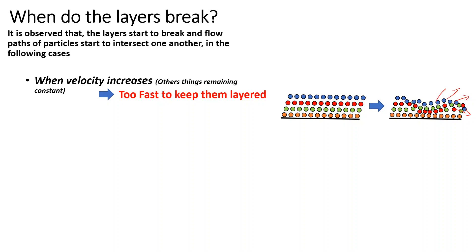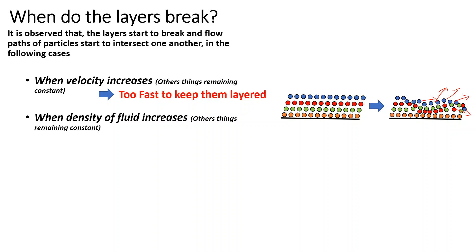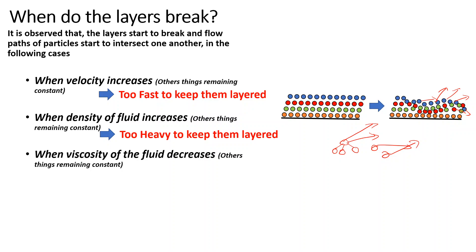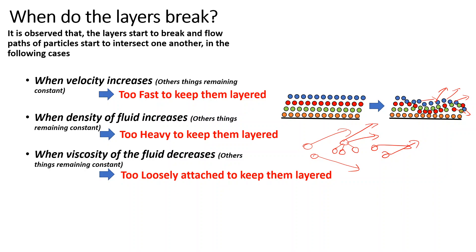Another case is when the density of fluid increases. If the particles become heavier, it is very difficult to keep a heavy particle in check, so the intermolecular force or viscosity will not be able to keep them in layers. Similarly, when viscosity decreases, the intermolecular force between particles decreases, and the bond is not strong enough to keep the layers uniform — they move here and there in a chaotic manner.